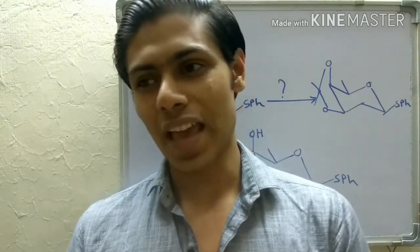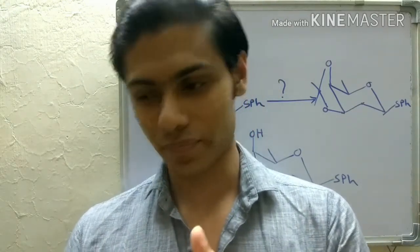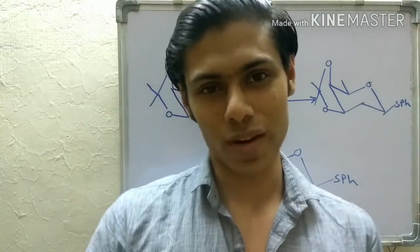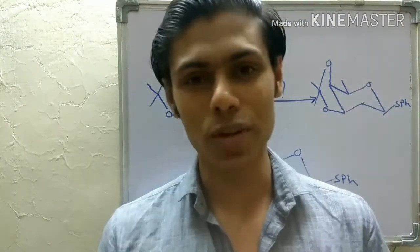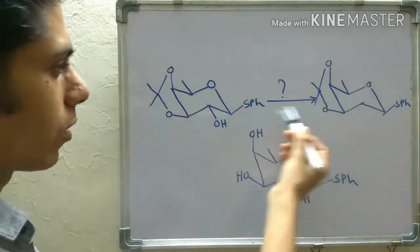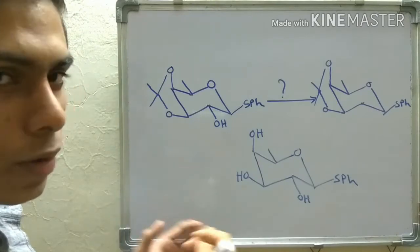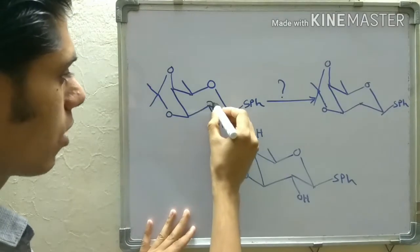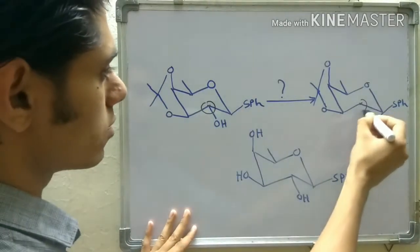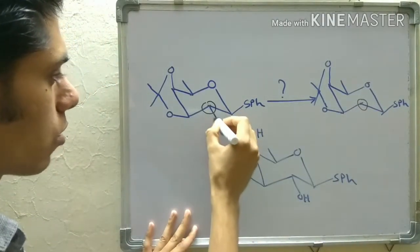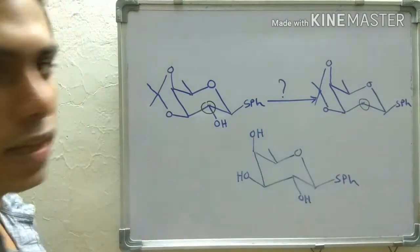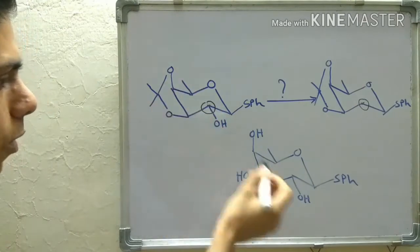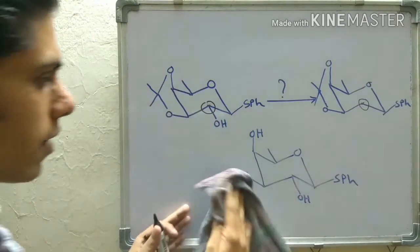I won't go into the full details of my research, but this is one important step in my total synthesis of a compound. You can see this step is the deoxygenation of this center — I am removing this OH group to get this deoxygenated carbon. I made this starting material from D-galactose, so this is one of the steps in my synthesis.